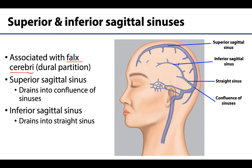Arguably the longest dural venous sinus is the superior sagittal sinus. You can see how long it is extending — it runs in the superior border of the falx cerebri and is very close to the bones of the calvaria. This sinus is also important for CSF drainage, as it is typically one of the major drainage sites. The superior sagittal sinus drains into the confluence of sinuses, where multiple sinuses drain together.